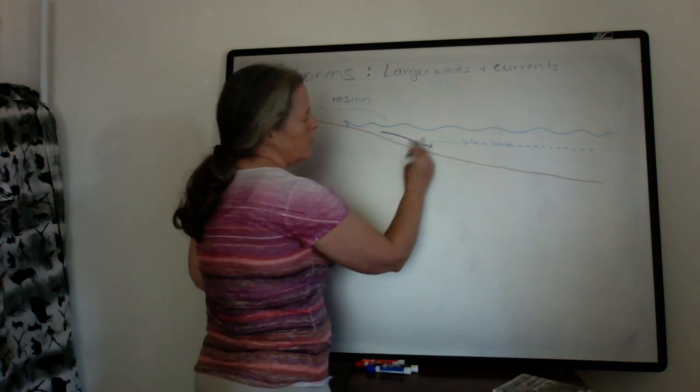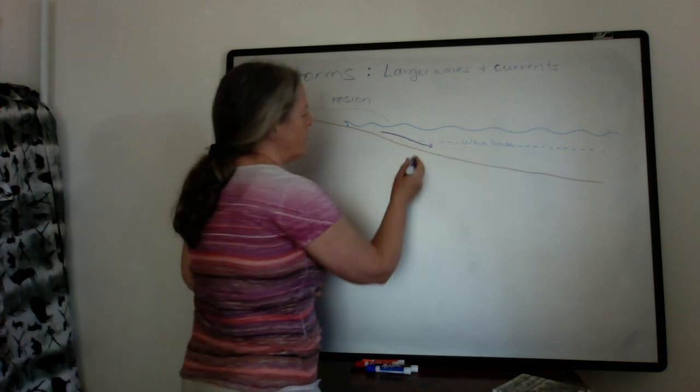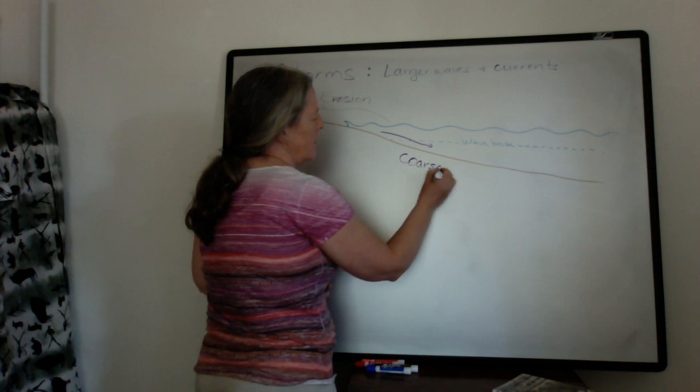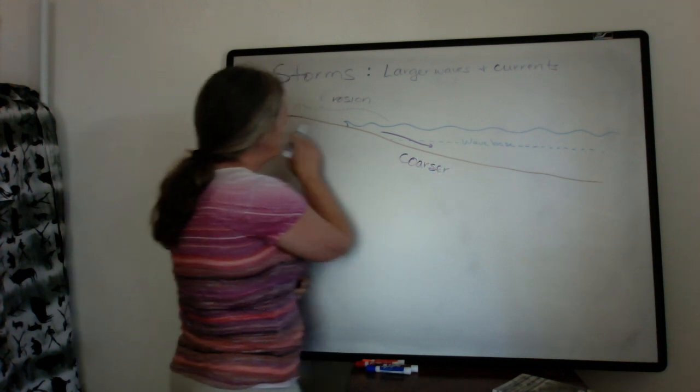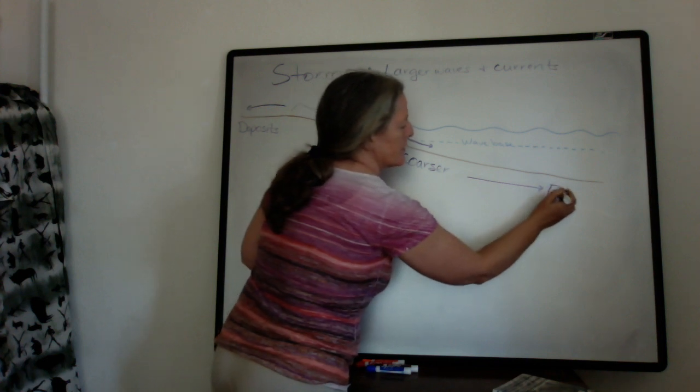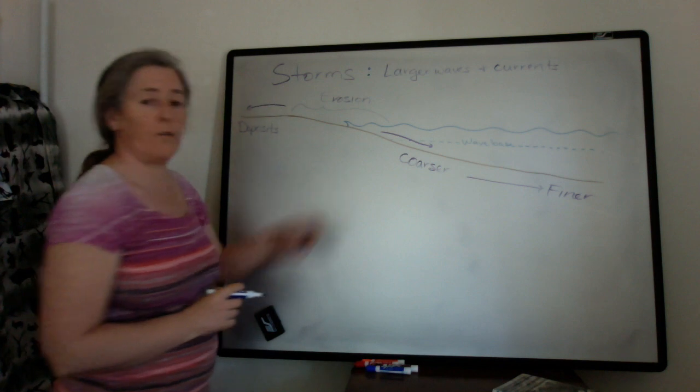In general, the flow speeds decrease as you go out, so usually the coarser grains are deposited near the shore and the finer grains get moved farther offshore.